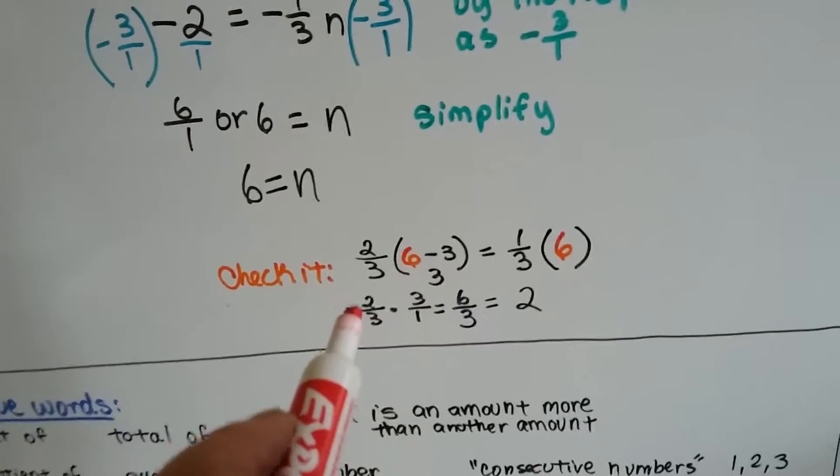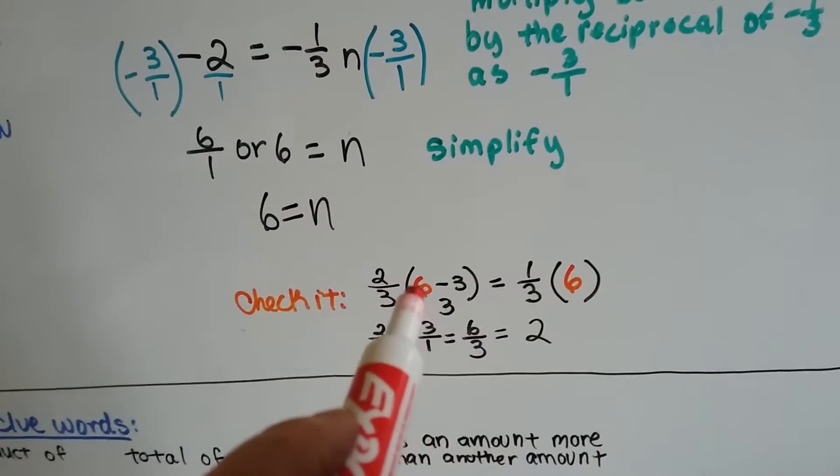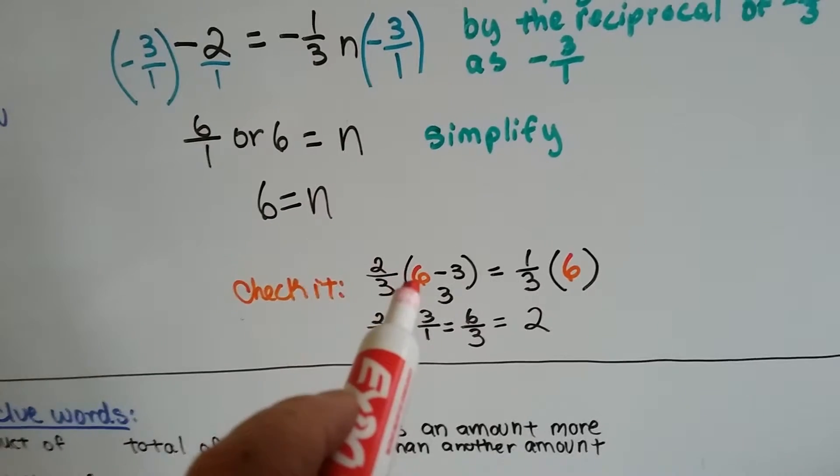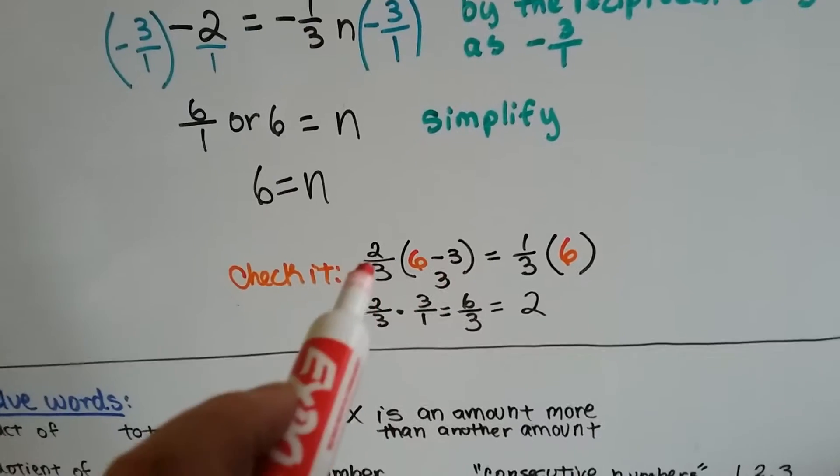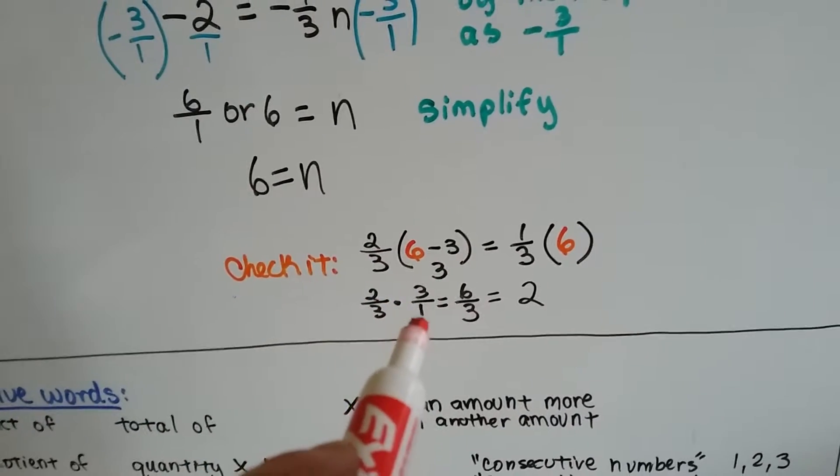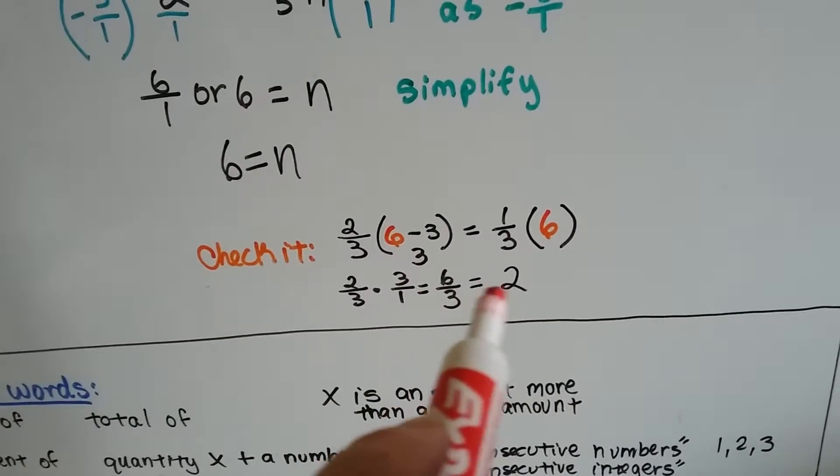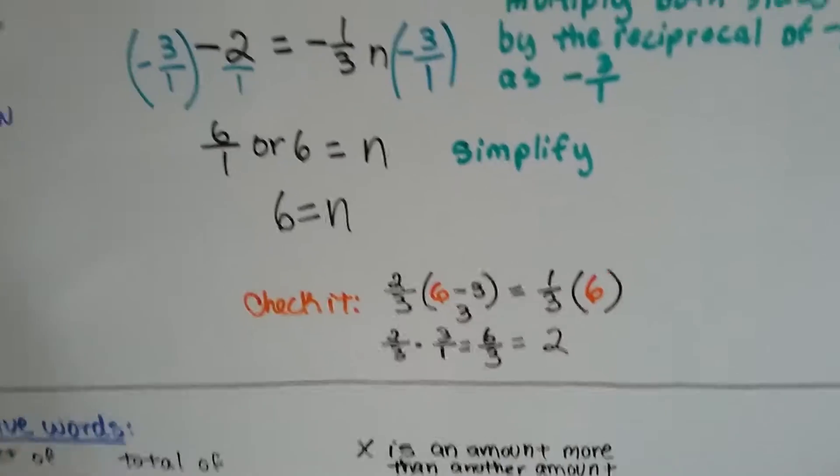And we can check it by doing 2 thirds. And where the n was, we put the 6, because that's what we say n is equal to. 6 minus 3 is 3. So, now we've got 2 thirds times 3, which equals 6 over 3 is equal to 2. Yep, we got it right.